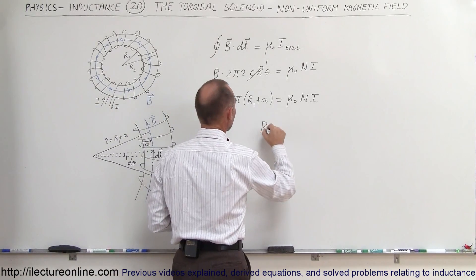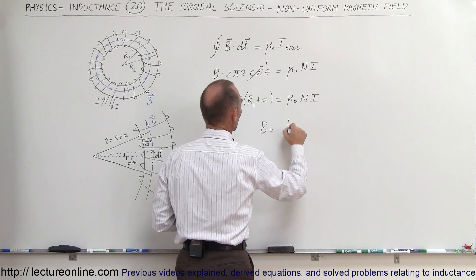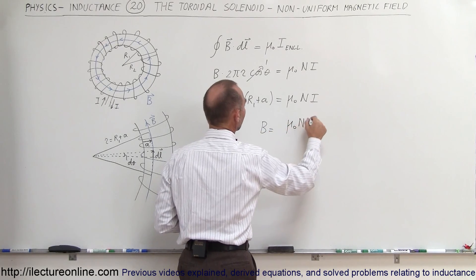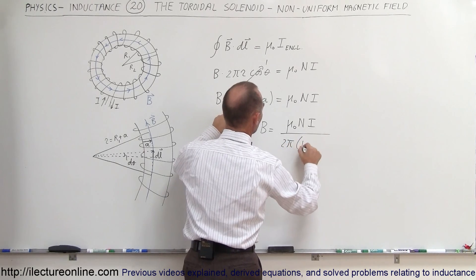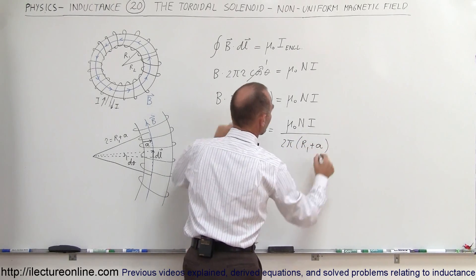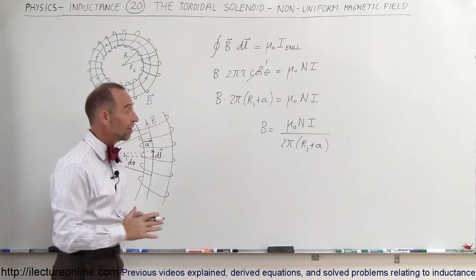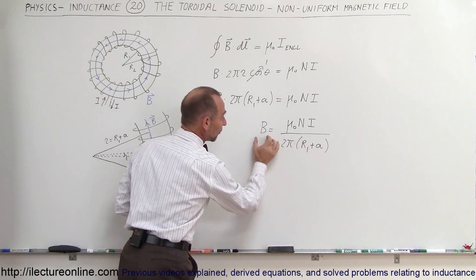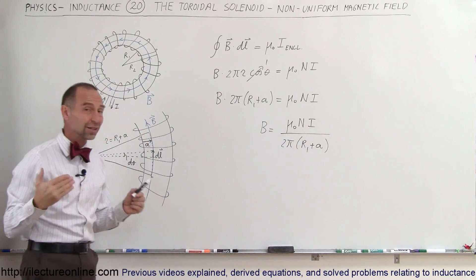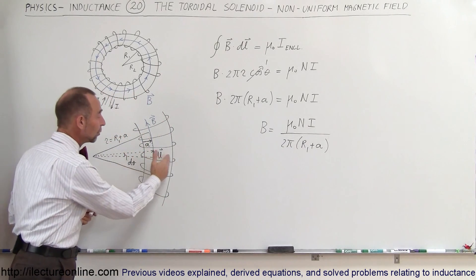So now we can solve for the B field the magnetic field so we can say that the magnetic field is equal to mu sub naut times n times I divided by 2 pi times the quantity r1 plus A. So really it does change as A gets bigger as we go further and further out a bigger denominator will give us a smaller magnetic field so it's not a constant it does diminish as we go further out.